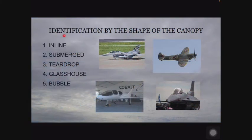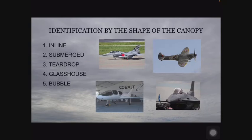We can also identify the aircraft by observing the shape of the canopy. Here we can see a few types of canopy, with a list of shapes and examples for each. This one is inline, this is submerged, this is glass house type of canopy, and this is bubble.